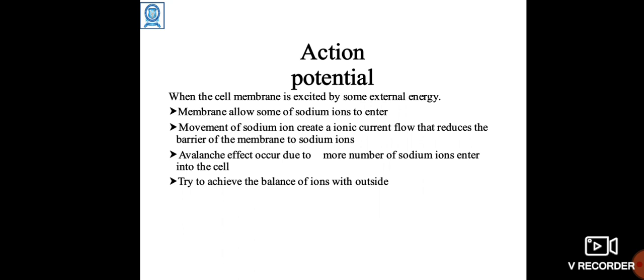Action potential: Cell membrane is excited by external energy. Membrane allows some sodium ions to enter. Movement of sodium ions creates ionic current flow that reduces the barrier of the membrane to sodium ions. An avalanche effect occurs due to more sodium ions entering the cell, trying to achieve balance of ions with outside.